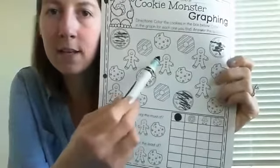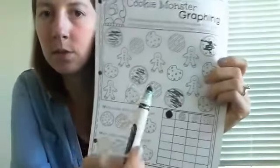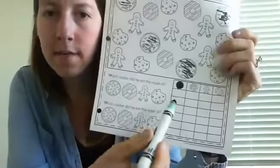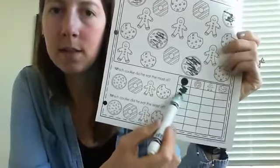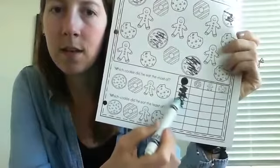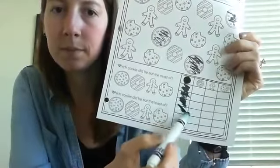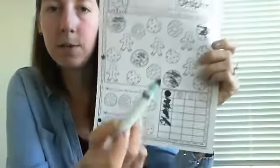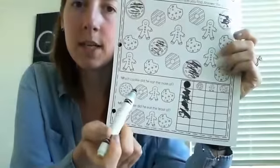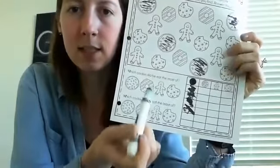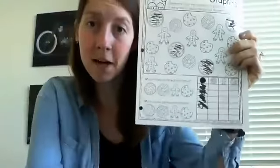So after you find the cookies in the top count them one, two, three, four and then you're going to fill in that many boxes at the bottom: one, two, three, four. Then you can switch to a different color to find the rest of these and then it will ask you some questions. Which did he eat the most of? Which did he eat the least of? And you can color that in for your answer.